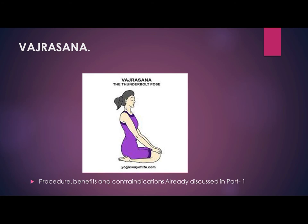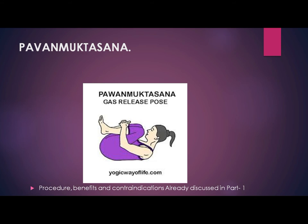The next asana is Vajrasana, also known as Thunderbolt pose. Its procedure, benefits, and contraindications have already been discussed in Part 1. Similarly, Pawanmuktasana — also called the gas release pose — was also covered in Part 1. You may revise those from Part 1.